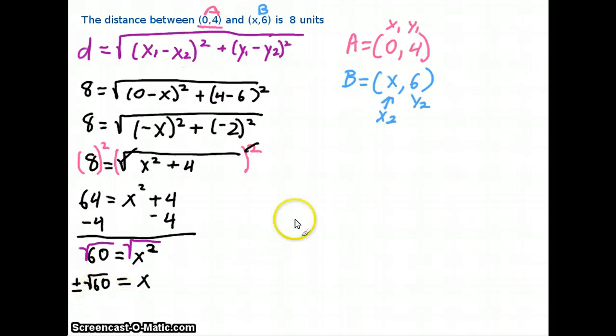And if we wanted to simplify that radical a little bit further, we could come over here and say, okay well, I know that 6 times 10 is really 60, so I could put that inside of a square root. And then looking at each of those, I can say 6 is really 2 times 3, and 10 is really 2 times 5.